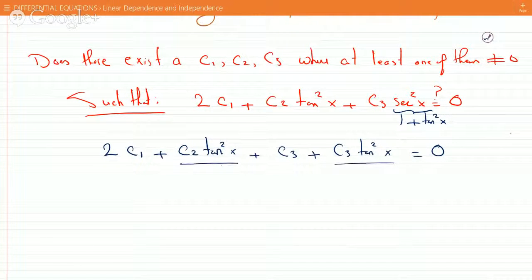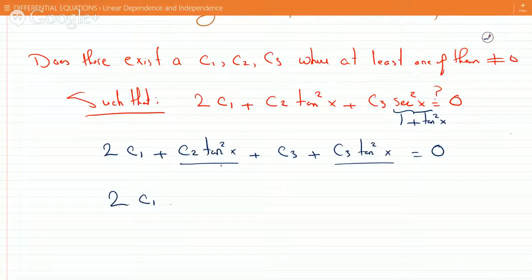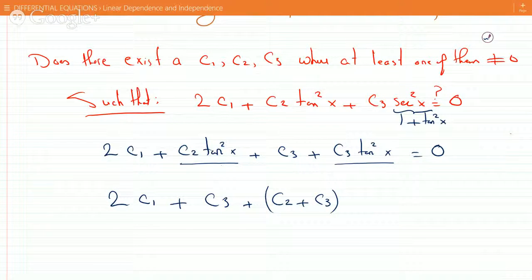So we get C3 plus C3 tan squared x equals zero. Put those two together, you get 2C1 plus C3 plus C2 plus C3 times tan squared equals zero.